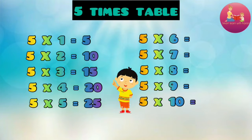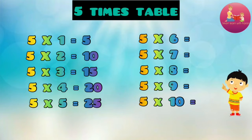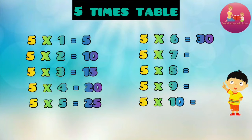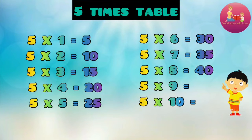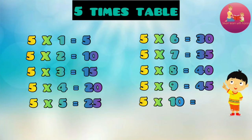5 into 6 equal to 30. 5 into 7 equal to 35. 5 into 8 equal to 40. 5 into 9 equal to 45.